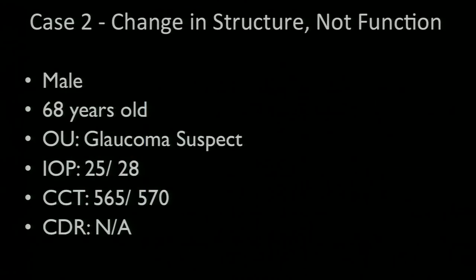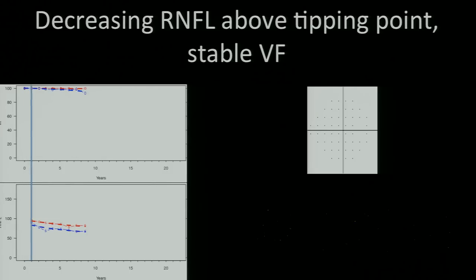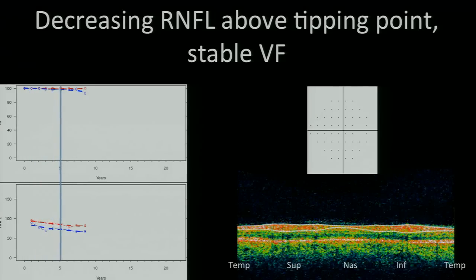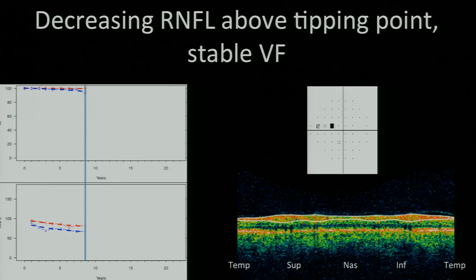Now, this person has a change in structure, but not in function. And what we see is that the retinal nerve fiber layer is becoming thinner, but it's not until it gets to a certain point of thickness where you start to see visual field loss.